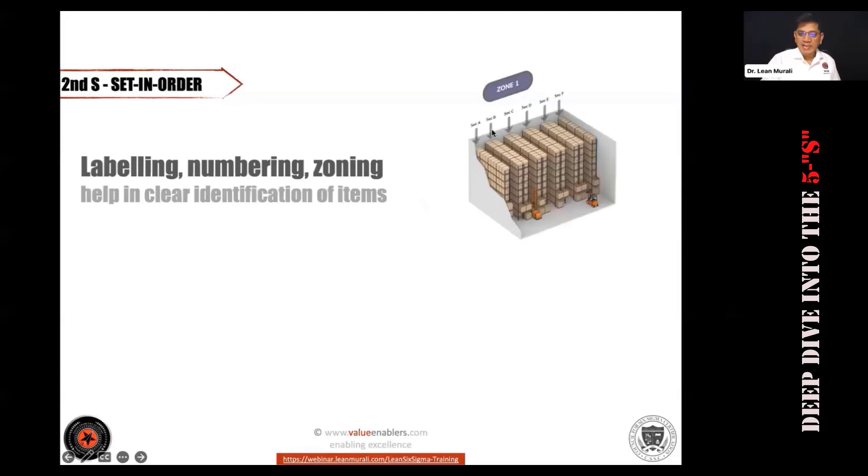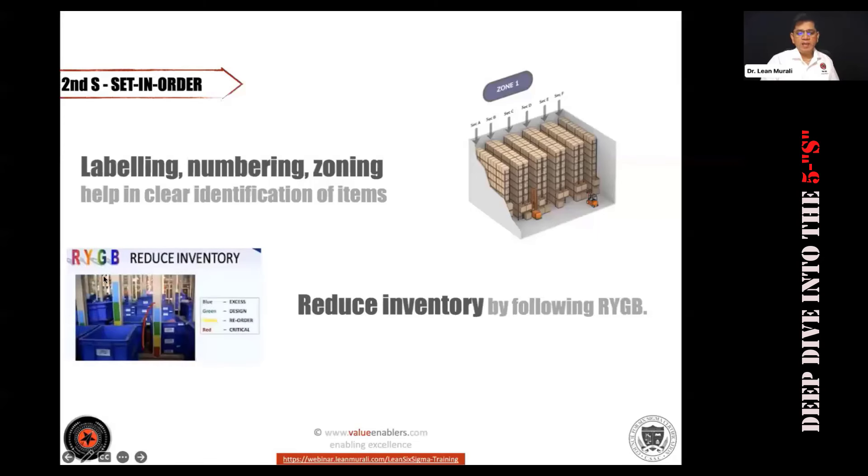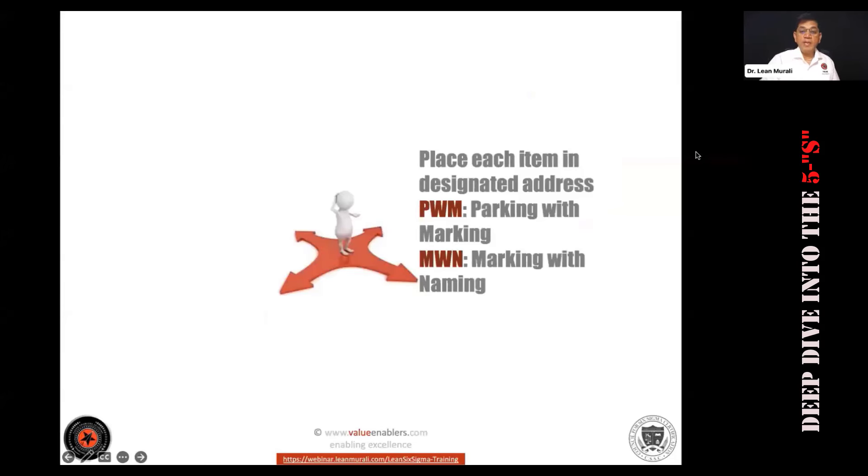In 2S, the labeling, numbering, it's all very important. Labeling, numbering of the zones help in clear identification of items. Even inventory, like if you're keeping the items, you can mark like red, yellow, green, and blue just to show red means it's at danger level, yellow means reorder level, green means it's as per design, and blue means excess - RYGB. This is also very important - whatever you park, parking with marking, and marking with naming. All of you type PWM and MWN which means whatever items you keep or park, please do the marking there - parking with marking. And whatever you mark, please name it also what item it is - parking with marking and marking with naming. All these things I'm telling you just for you to remember quickly, recall quickly.